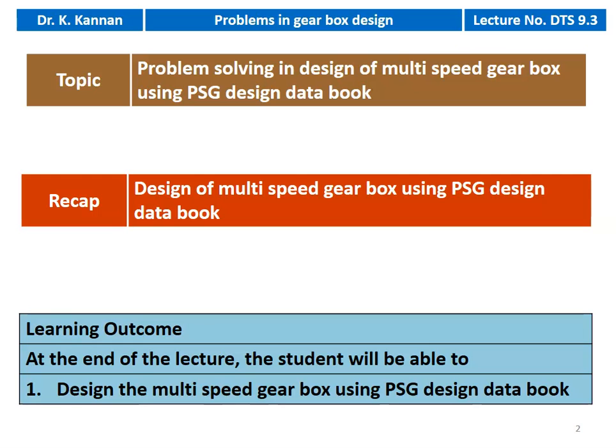Normally in the university examination, for any problem, the maximum time available is 20 to 30 minutes, so within that you have to solve. We require speed, so we have to solve the problem quickly. That way you will complete all five problems in the subject.